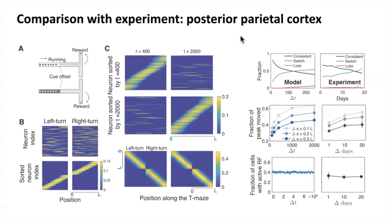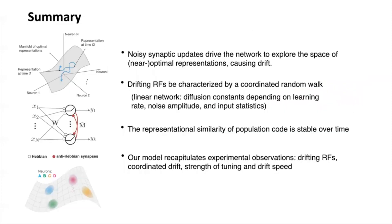Our model can also explain drifting behavior in another brain region, posterior parietal cortex, during sensorimotor tasks. To summarize, I have shown that degeneracy and synaptic noise can explain representation drift. We showed that these drifting receptive fields are coordinated to preserve pairwise similarity, and our model recapitulates many experimental observations such as the phenomena observed in hippocampus and posterior parietal cortex.